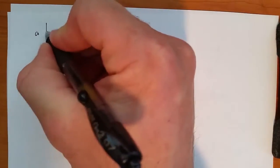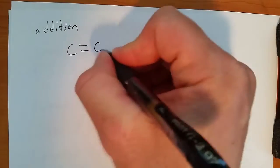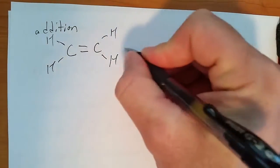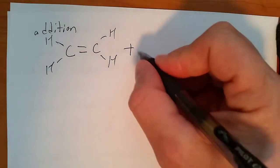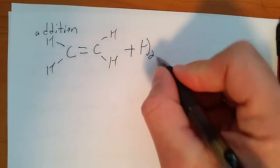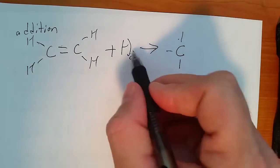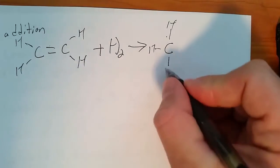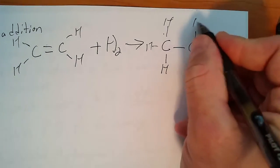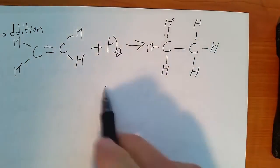All right, finally, types of organic reactions. Addition. Okay, addition is going to involve if you have a double bond, like so, and you add something to it. Let's say we add more hydrogens to this, and we get kind of breaking the double bond to add the hydrogens. Okay, that's addition.